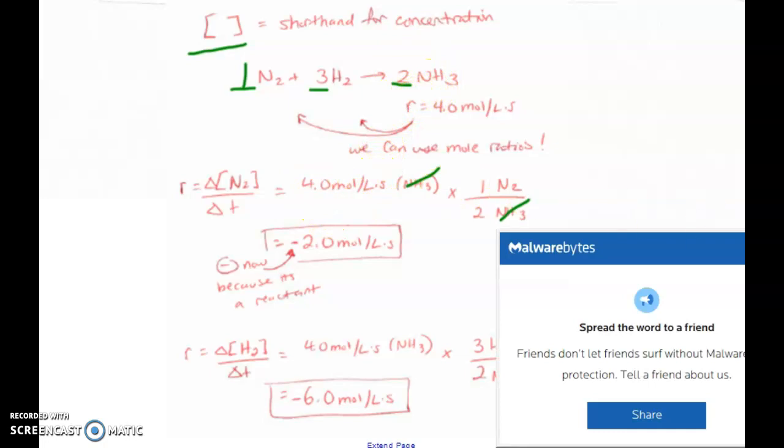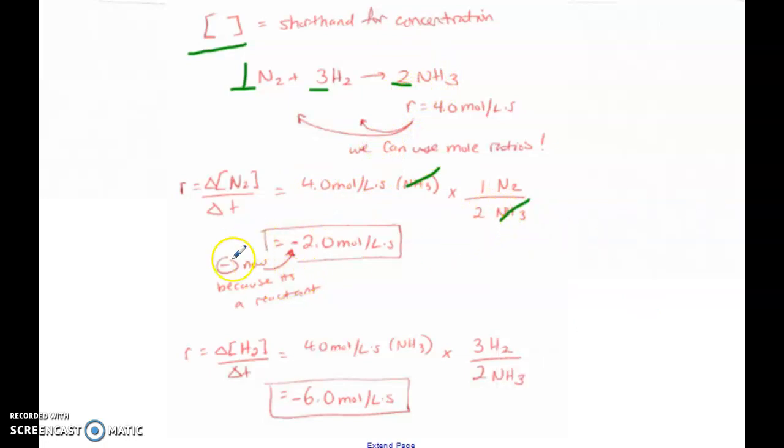So we have four moles per liter per second times one over two. One nitrogen is used for every two ammonia. So four times one divided by two, we get now two moles per liter per second. But remember, we are now going to put that negative number in because this is a reactant.